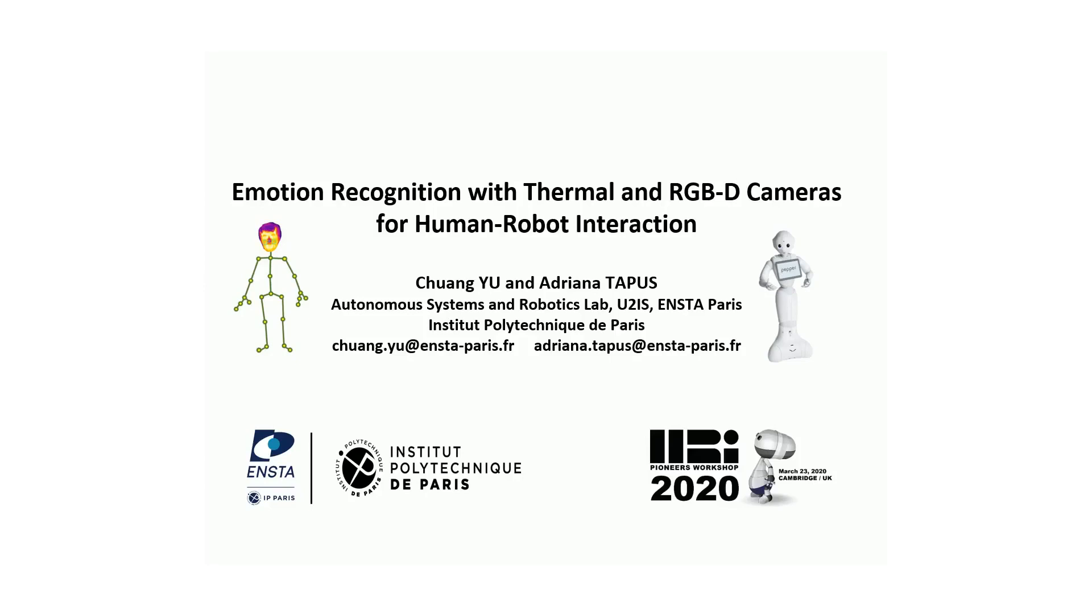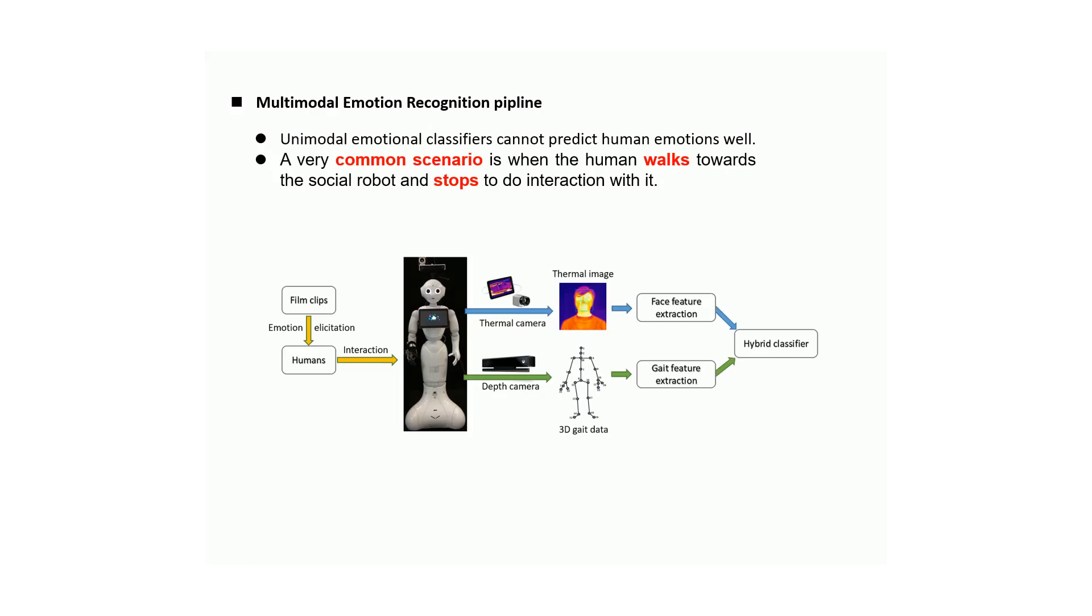Here is our late-break report paper in HRI 2020 titled Emotion Recognition with Thermal and RGB Cameras for Human-Robot Interaction. Unimodal emotional classifiers cannot predict emotion well, so we use a multimodal classifier for emotion recognition with thermal face features from thermal camera and gait features with RGB camera.